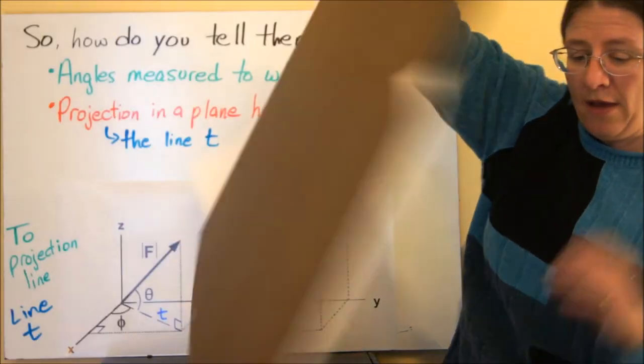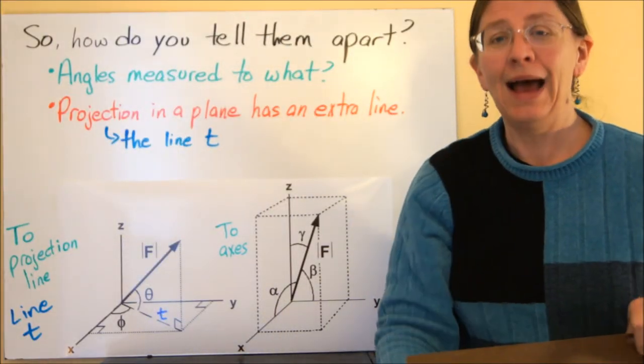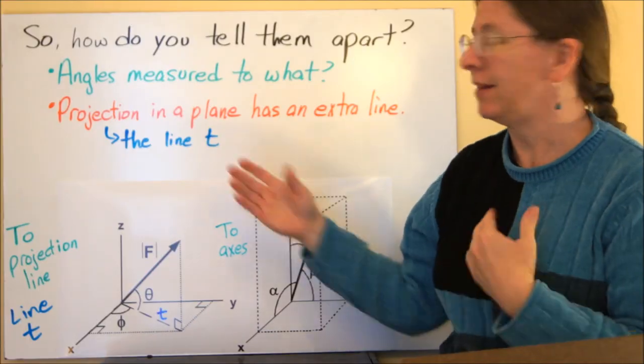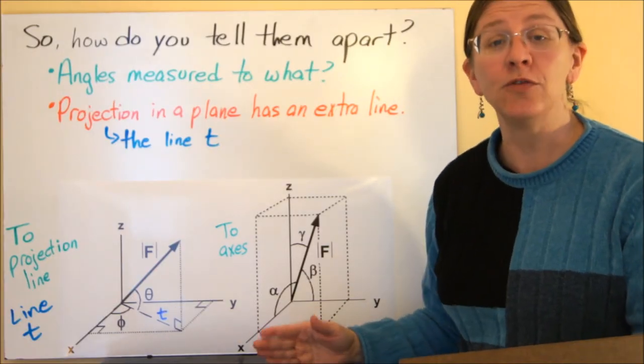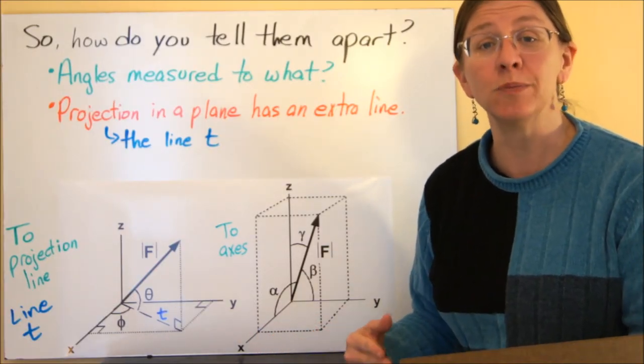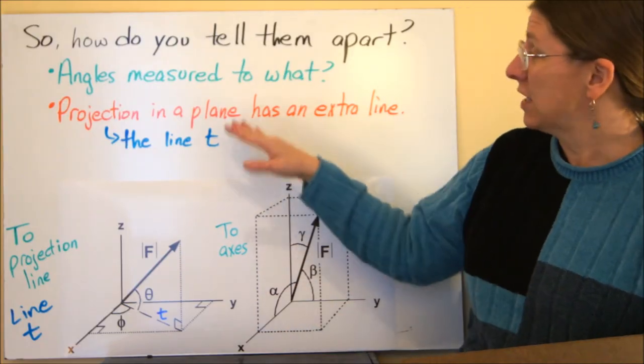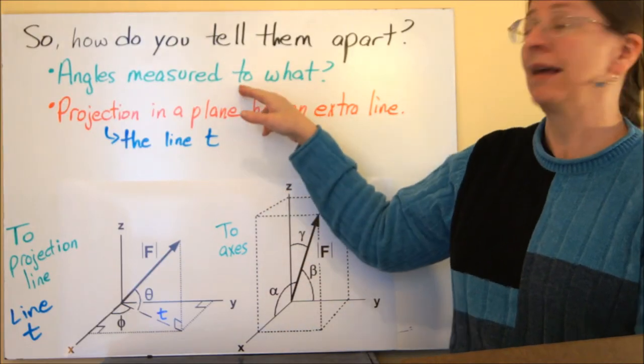And last but not least, we have the major question: how do you tell them apart? You've got these two possibilities, and now you've given a problem. How do you figure out which one you have? Do you have a projection in a plane or direction cosines? There are a couple things to look at. What are the angles measured to? If you're looking for direction cosines, each of these three angles is measured between the vector and the axes.